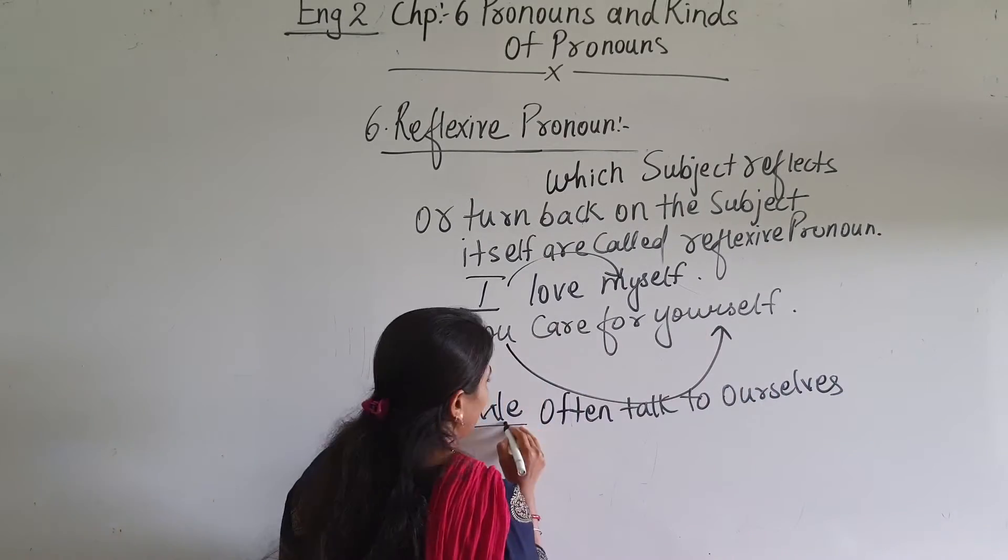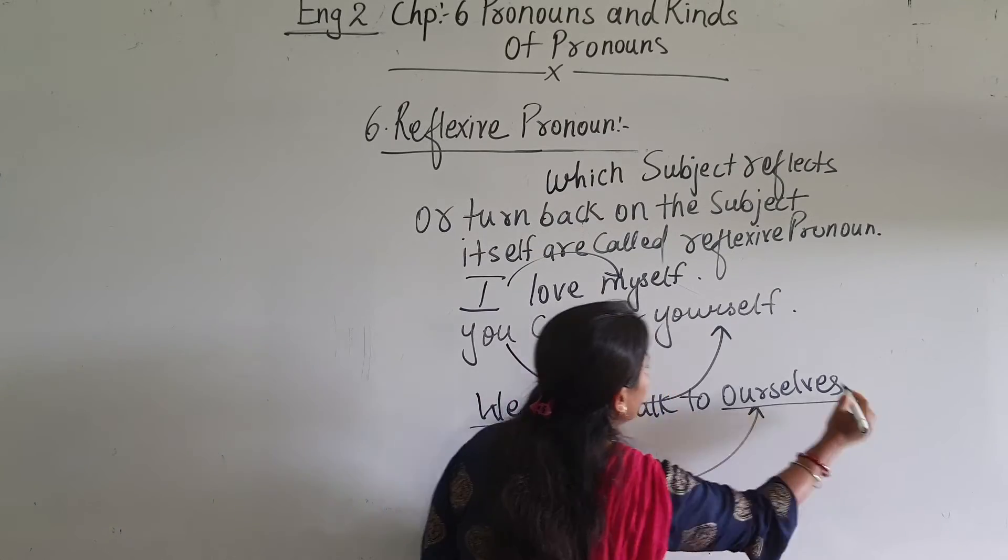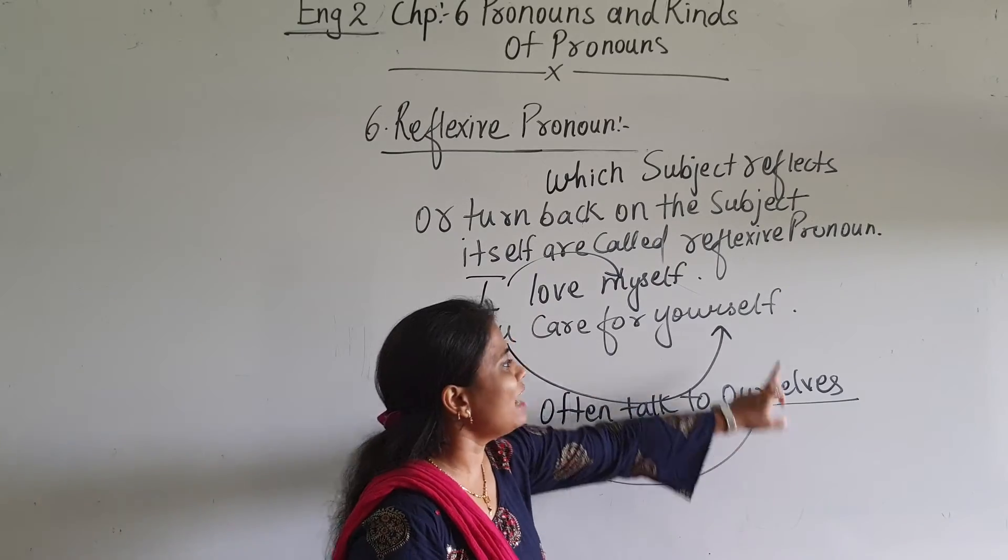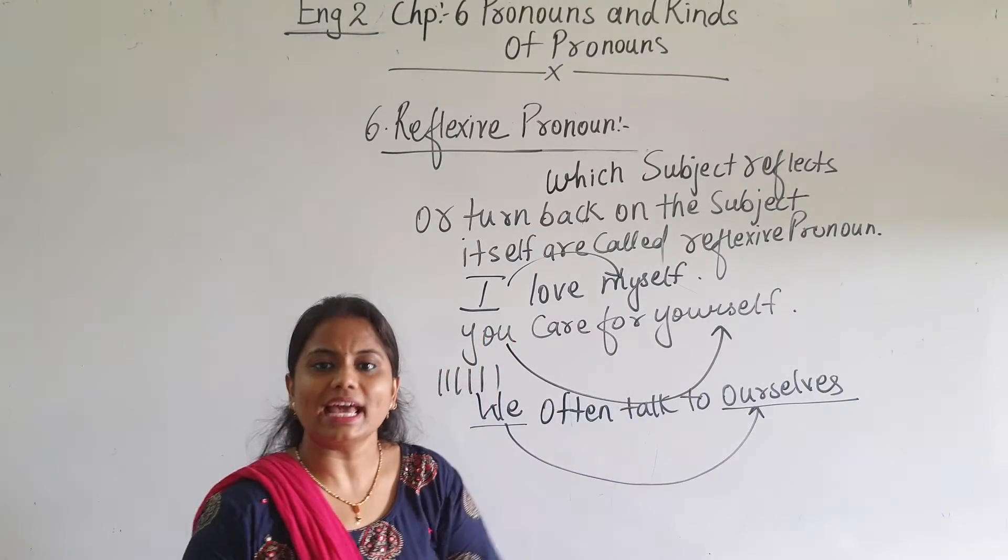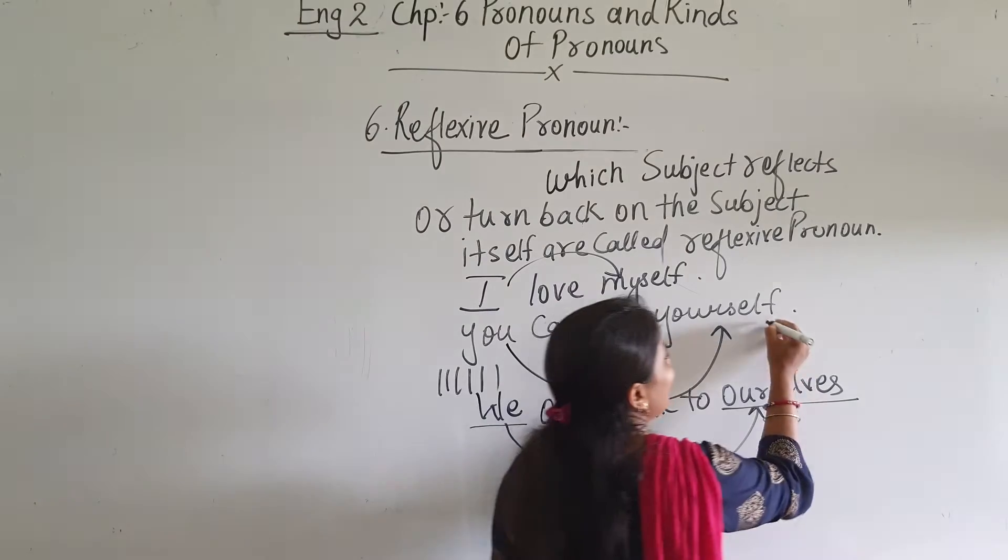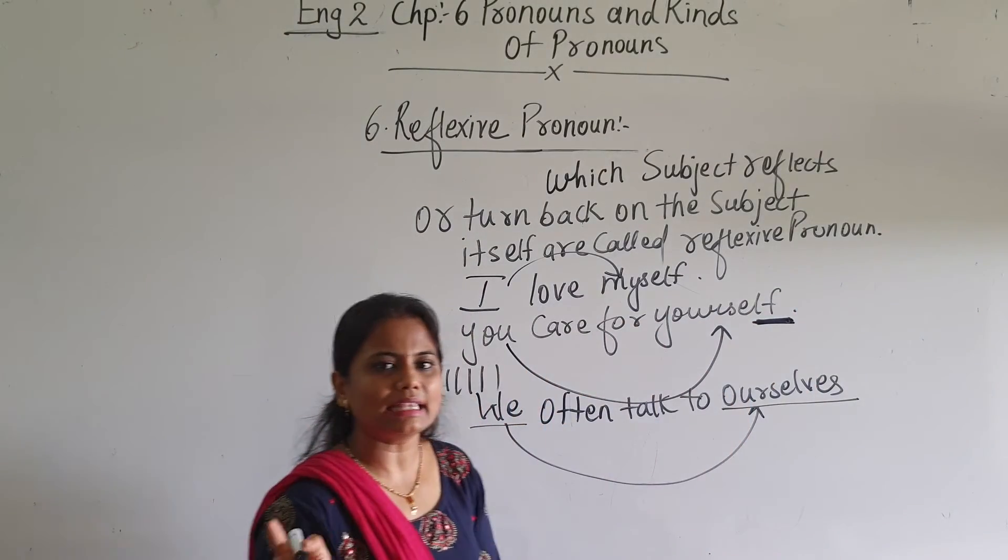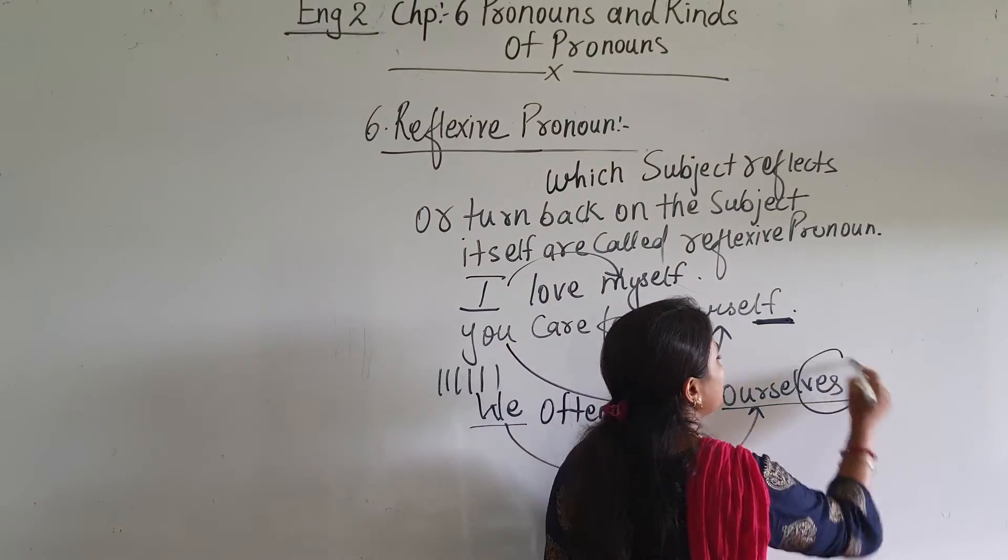We, ourselves. Now we, as you know, is more than one person. That's why the self will be changed to VES. Why? You know when the noun ends with F or FE, its plural becomes VES.